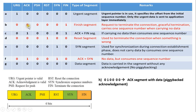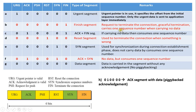The second option is 0,0,0,0,0,1. Only the finish flag is set to 1. So the type of TCP segment is a finish segment. This finish segment is used to request terminating the connection — it is used to gracefully terminate the connection. When the finish segment carries no data, it consumes one sequence number.